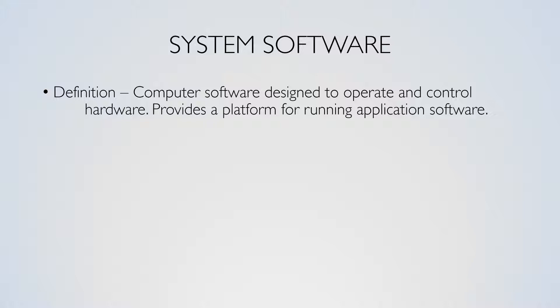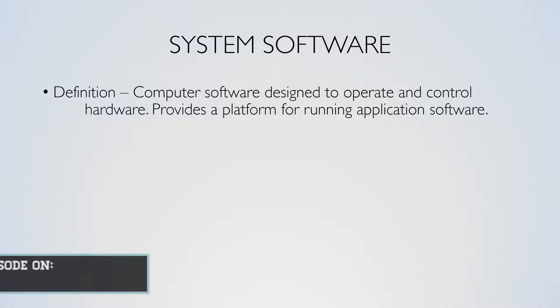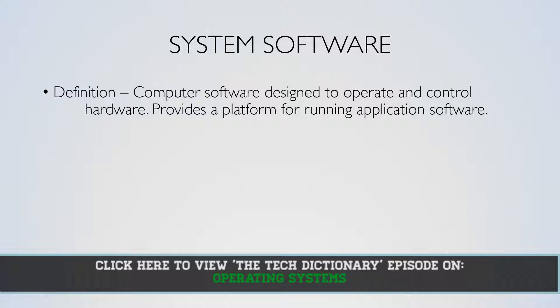The top-level component of system software is the operating system, which I talked about in another Tech Dictionary episode. The operating system is a platform on which programs can be run and developed.